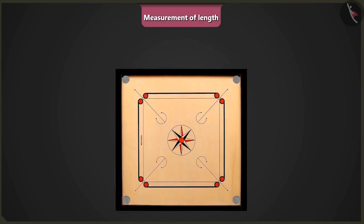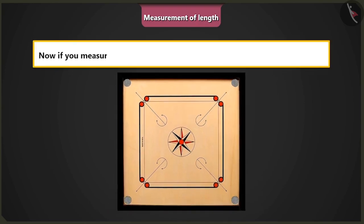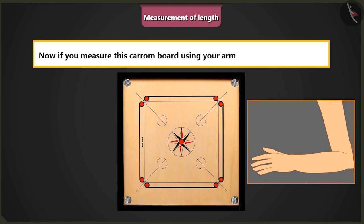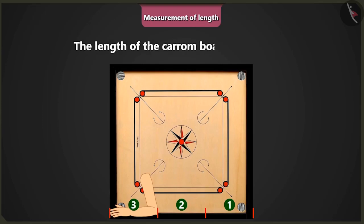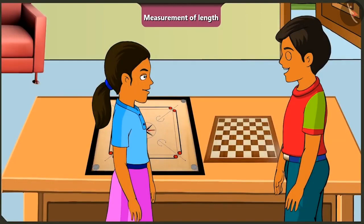Now if you measure the length of this carom board using your arm, then what will be its length? Hmm, 1, 2 and 3. The length of this carom board is 3 cubit length of my arm. Absolutely correct!